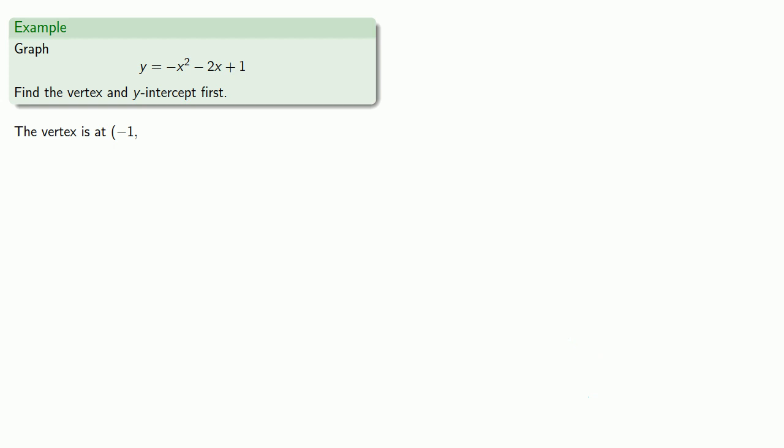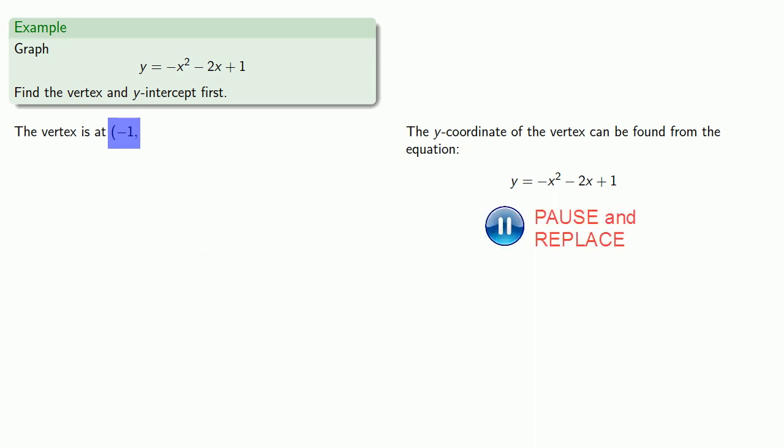Once we know the x-coordinate of the vertex, we can find the y-coordinate from the equation. We know that y = -x² - 2x + 1. Our x-coordinate is -1, so we'll replace and compute. That tells us the y-coordinate is 2, so our vertex is at (-1, 2).